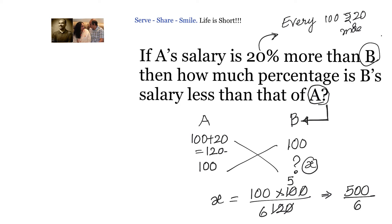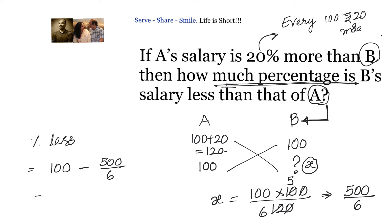They are not asking for the actual value — they are asking how much percentage is B's salary less than that of A. Since we are dealing with 100, we can directly say: percentage less salary equals 100 minus 500 by 6. Simplifying: 600 minus 500 over 6, which is 100 by 6, or 50 by 3, which equals 16 and 2/3 percent less.